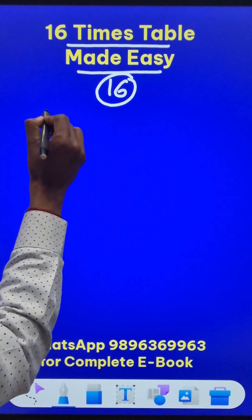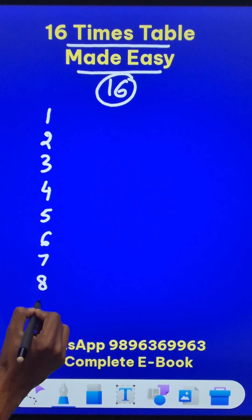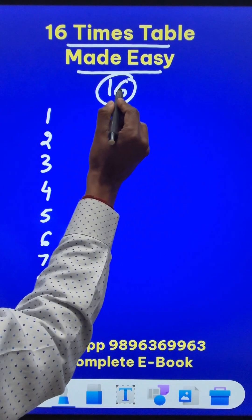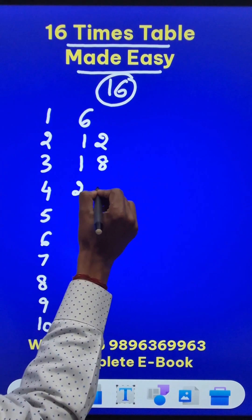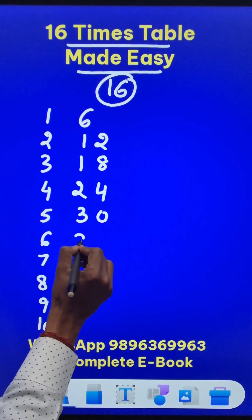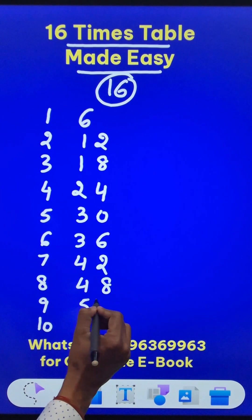So just write the table of 1 first: 1, 2, 3, 4, 5, 6, 7, 8, 9, and 10. Then write the table of 6: 6, then we have 12, then we have 18, 24, 30, 36, 42, 48, 54, and 60.